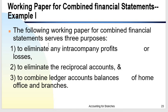The working paper for the combined financial statements serves three purposes: to eliminate intercompany profits, to eliminate the reciprocal accounts, and to combine the account balances of the home office and the branch.